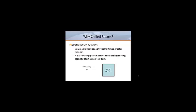Water is a far more efficient way to transport thermal energy. Since the volumetric heat capacity of water is about 3500 times greater than air, we can use a water line to replace a much larger duct. In fact, a one-inch water pipe can handle the heating and cooling capacity of an 18 by 18 inch air duct.